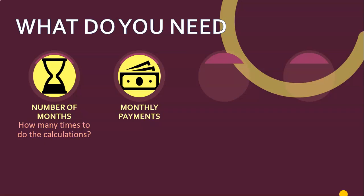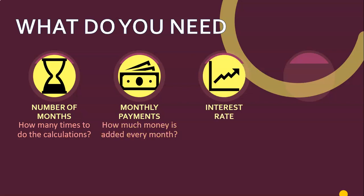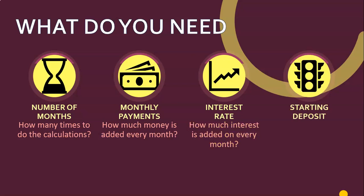So we want to save some money in a bank account. We need to know the number of months - how many months are we going to be saving for, and how many times does this calculation need to be done. Then we're going to invest money - I've looked at my budget and I've got a certain amount I'm willing to put into the bank account every month. The bank will give me an interest rate, some amount they give me to store my money. And I need to know how much money I'm starting with - in this example, probably zero.